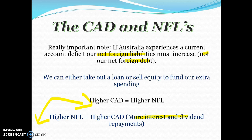The best way to analyze the CAD–NFL relationship is to go both ways. A higher CAD leads to higher net foreign liabilities because we have to borrow or sell off assets. Higher net foreign liabilities then lead to a higher CAD because we will have more interest repayments, dividend repayments, and profit repayments flowing out of the current account. It's important to recognize it's not just interest — it also includes dividends and profits.